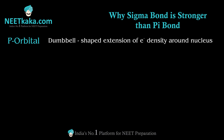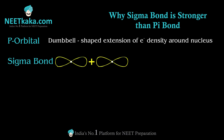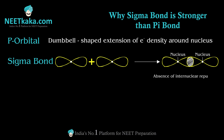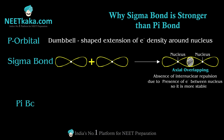When two p orbitals — px and px — approach each other and overlap axially, they overlap between the nuclei where only electrons are present. This means there is absence of internuclear repulsion, resulting in the formation of a sigma bond. In sigma bond formation, orbitals approach at a 180-degree angle with axial overlapping and no internuclear repulsion.